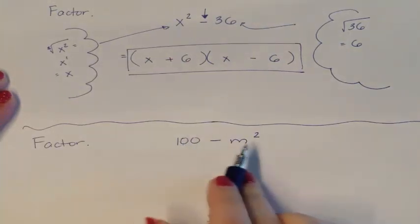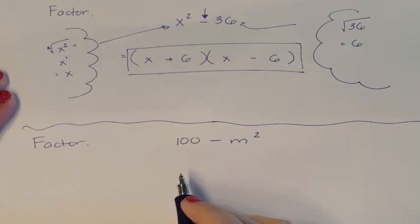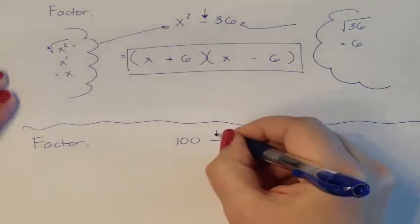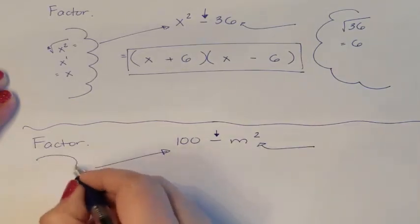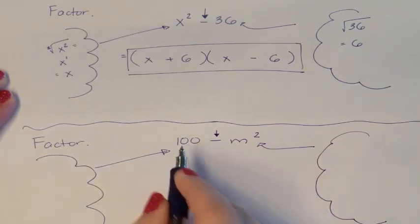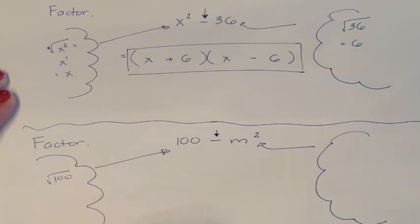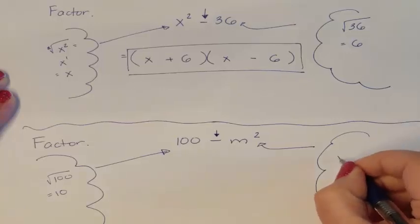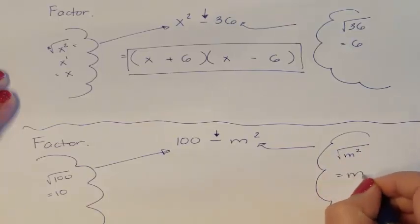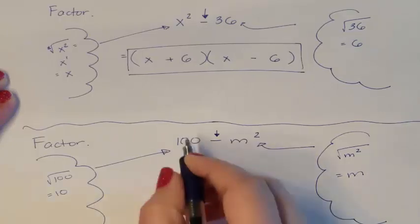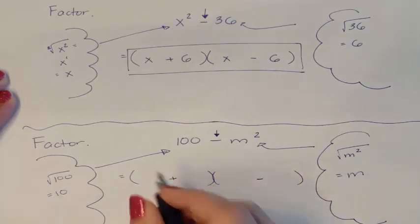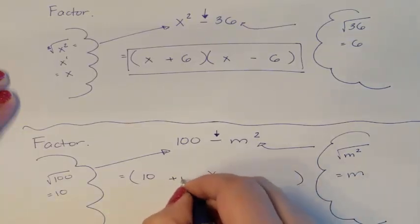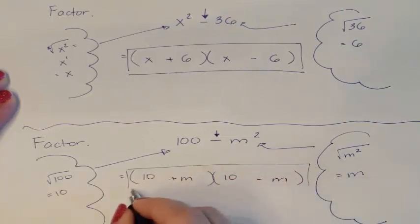Our next problem: we have two terms, so we're trying to see if we can do the difference of two squares. It is a subtraction problem, so I'm so far there. Can I actually square root both the front and the back — term 1 and term 2? Term 1 is 100. Can I take the square root of 100? The square root of 100 is 10. Can I take the square root of the second term? The square root of m squared is m. So I can take the square root of both terms, and it was subtraction, which means it is a difference of two squares. Plus minus — the front term goes in the front, the back term goes in the back. And this is our difference of two squares.